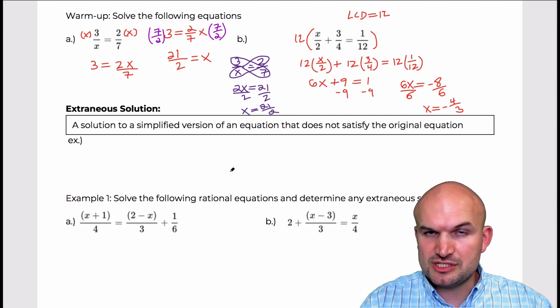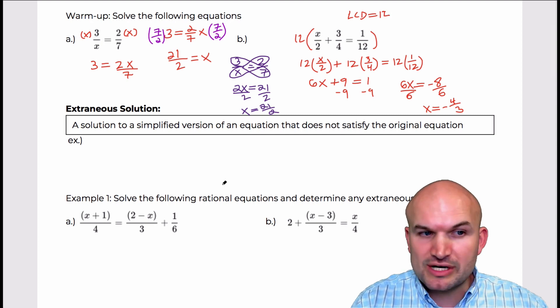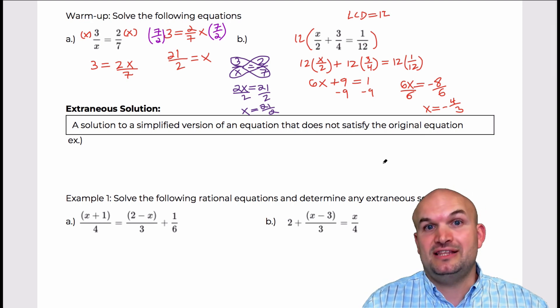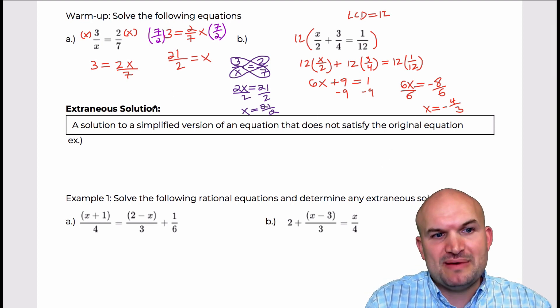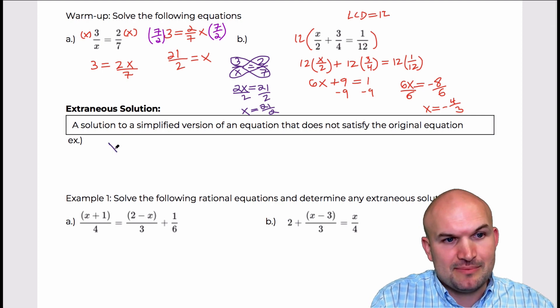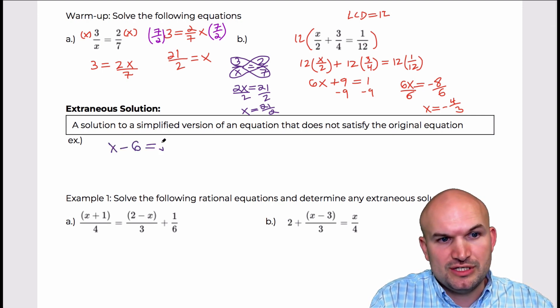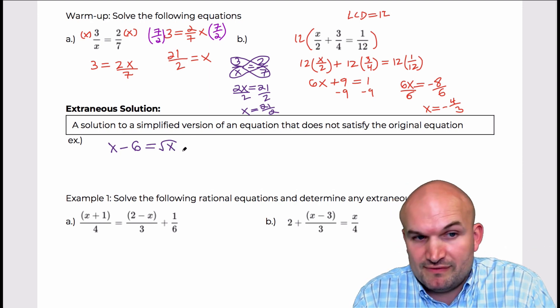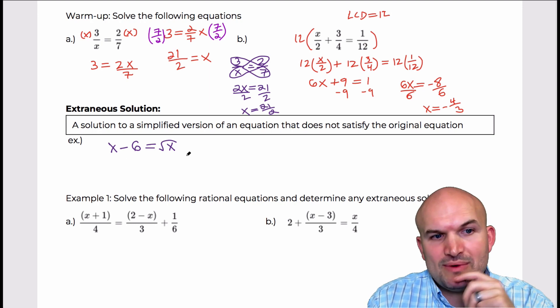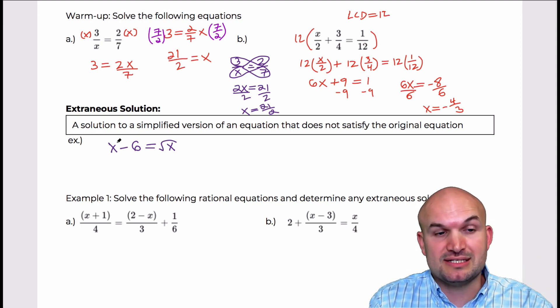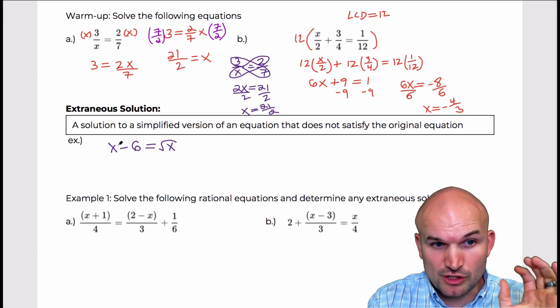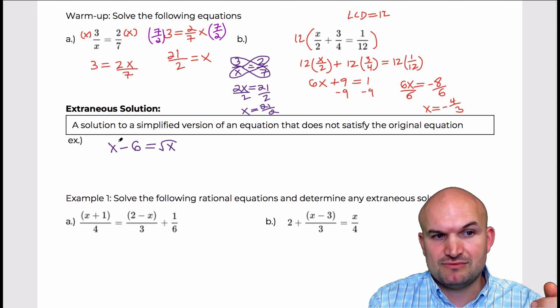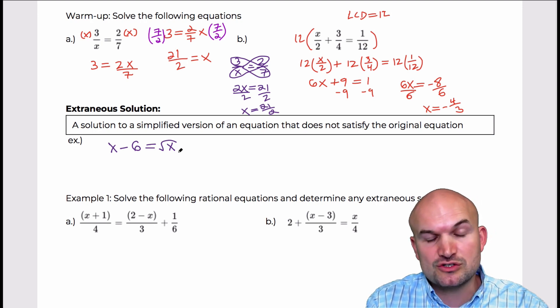So the next thing I want to talk about is extraneous solutions before we actually get to the work. So extraneous solution is a solution to a simplified version of an equation that does not satisfy the original equation. So what's basically happening here is I have an example. So if I had x minus 6 is equal to the square root of x. Now when we just have the square root of x, that's going to be just the, you can only take the square root of the positive value, right? So what we have here is we know there's going to be one solution. This is a, we know there's only one solution that is going to make this equation true. Because basically we have this raised to the x to the first power and then we have actually a square root there.